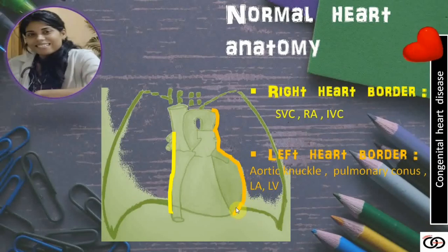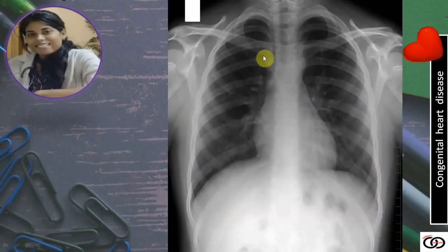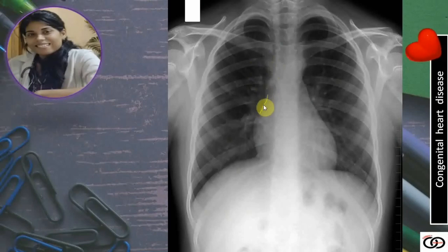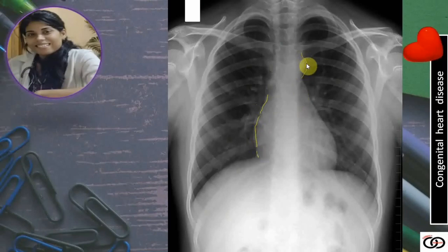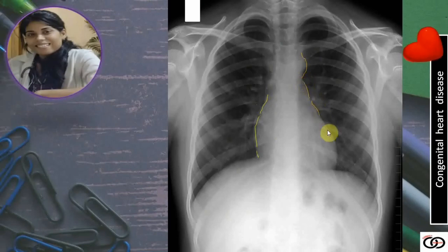Appreciate the borders in a normal chest X-ray film. The right heart border is formed by the superior vena cava, right atrium, and inferior vena cava. While the left heart border is formed by the aortic knuckle, the pulmonary conus, left atrium, and the left ventricle.